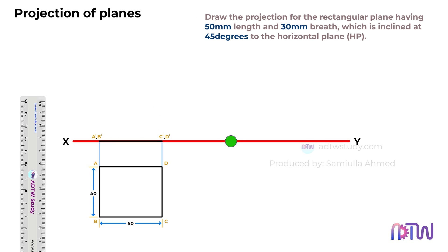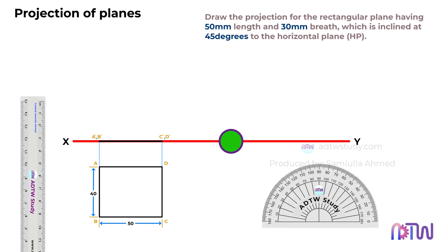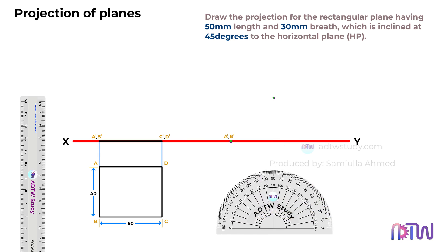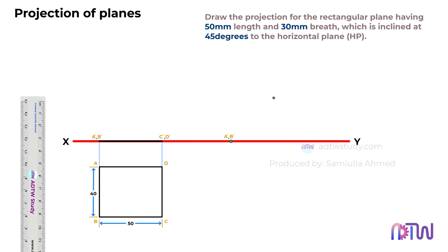Start by marking a point on your drawing. This point represents A dash, B dash, of the true length in the front view. Next, take a protractor and, using this point as the origin, mark a 45 degree angle as illustrated. Once you've established the 45 degree angle, draw a line joining these two points.